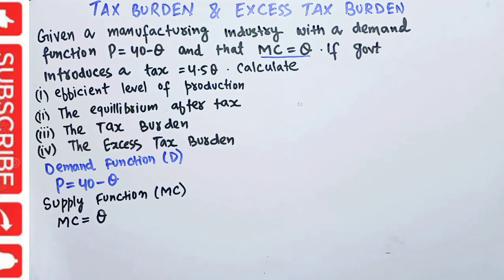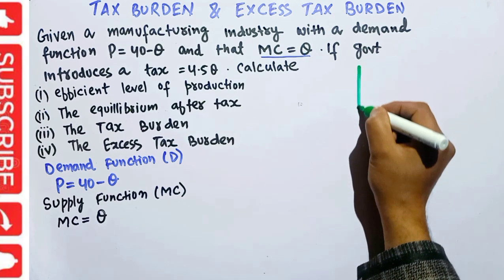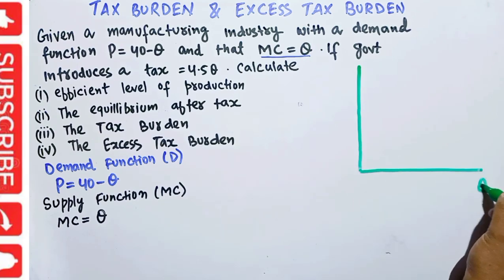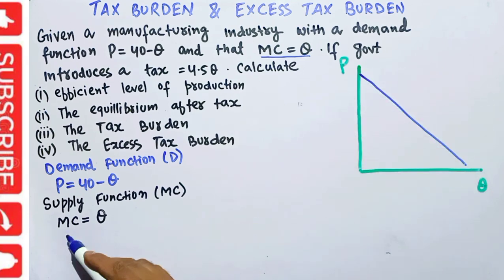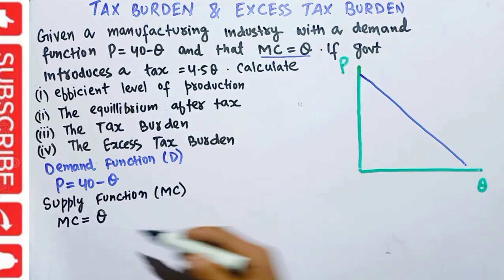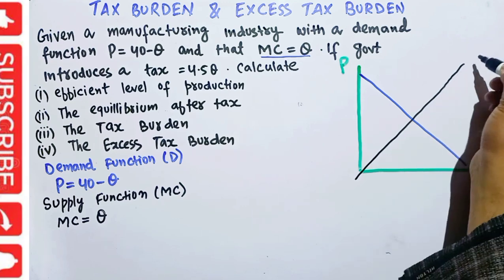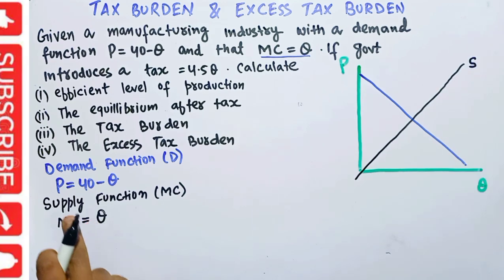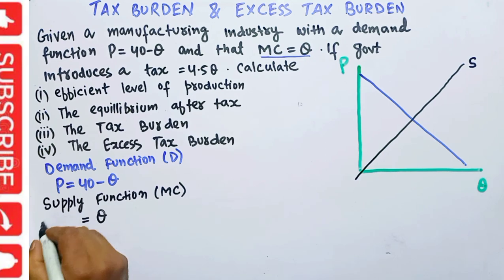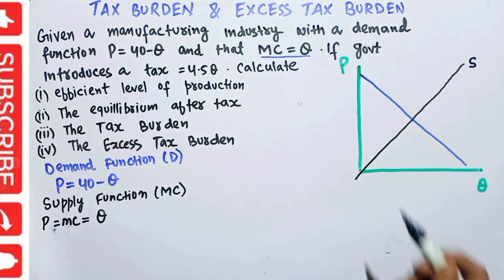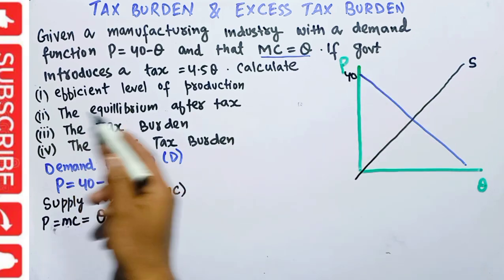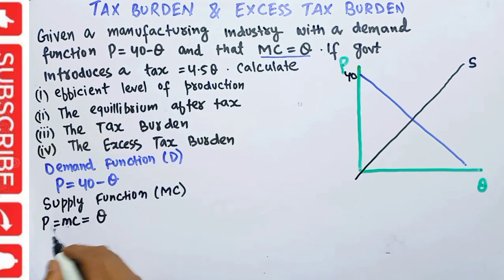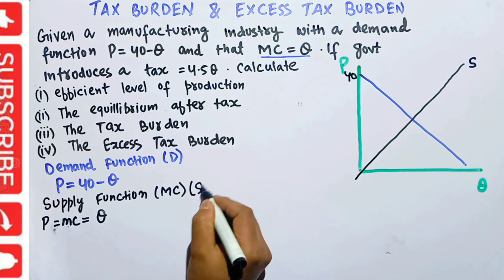Now let us first draw the graph to make sense of this. We have quantity on the horizontal axis and price on the vertical axis. Given this demand function, it will be a downward sloping demand function. The supply function goes through the origin. The y-intercept of the demand function is 40. The efficient level of production occurs at the intersection of demand and supply.